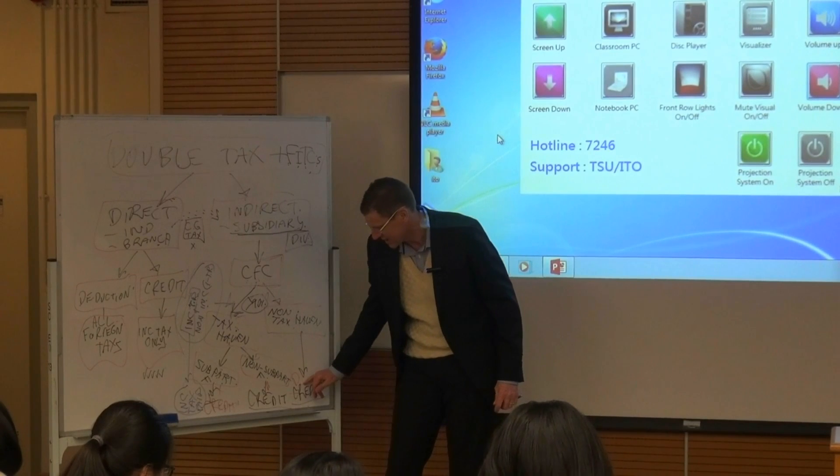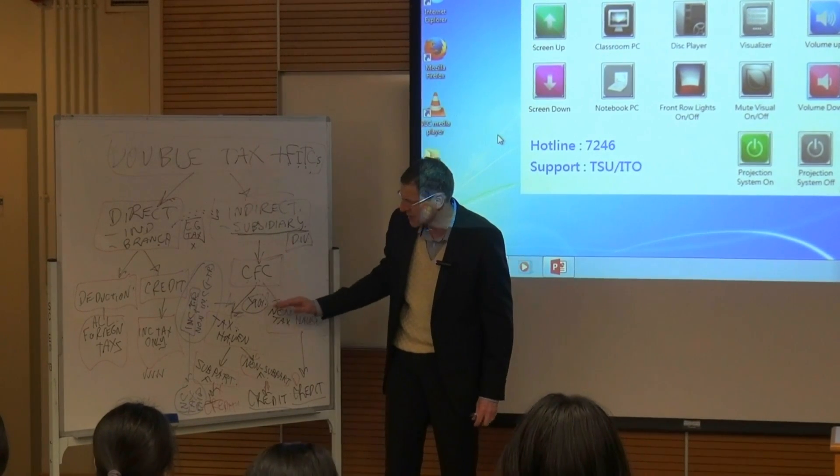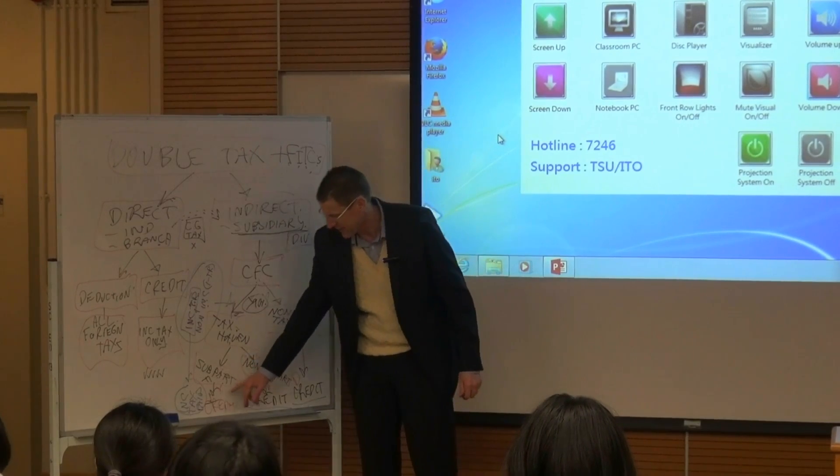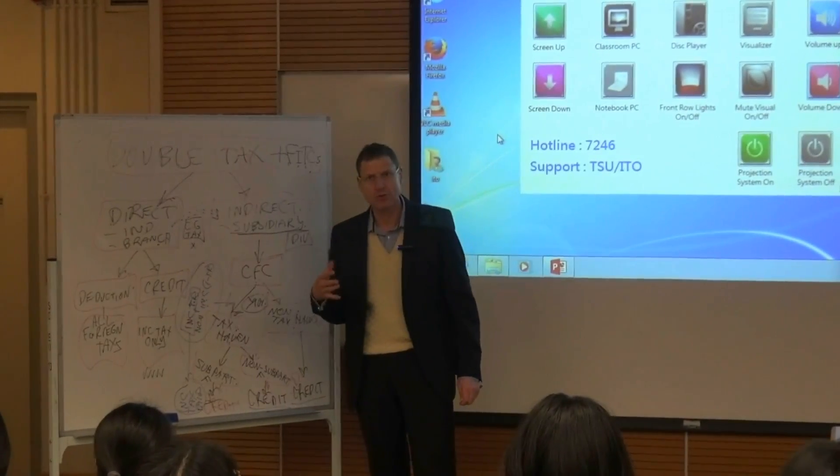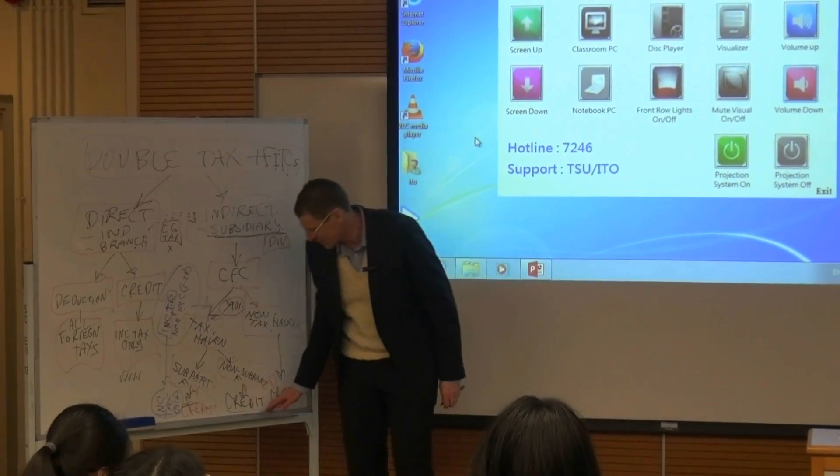Over here only your dividends go into your US taxable income calculation, so you still have control. The reason why you want to avoid subpart F is you want to keep control through how much you distribute as dividends.